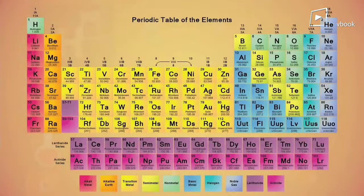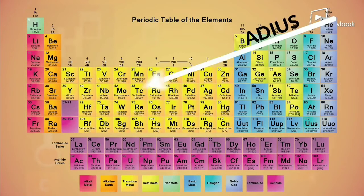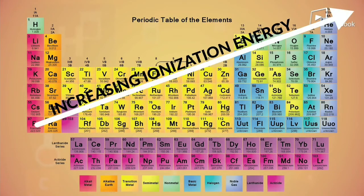As we know, the atomic radius increases in this pattern in the periodic table, and the ionization energy increases in this way.